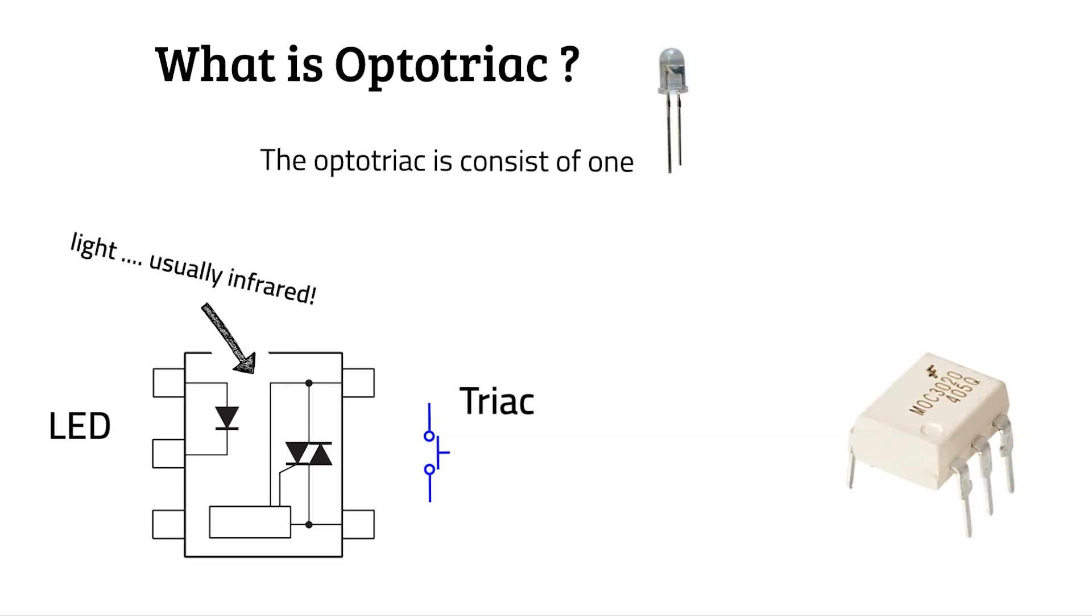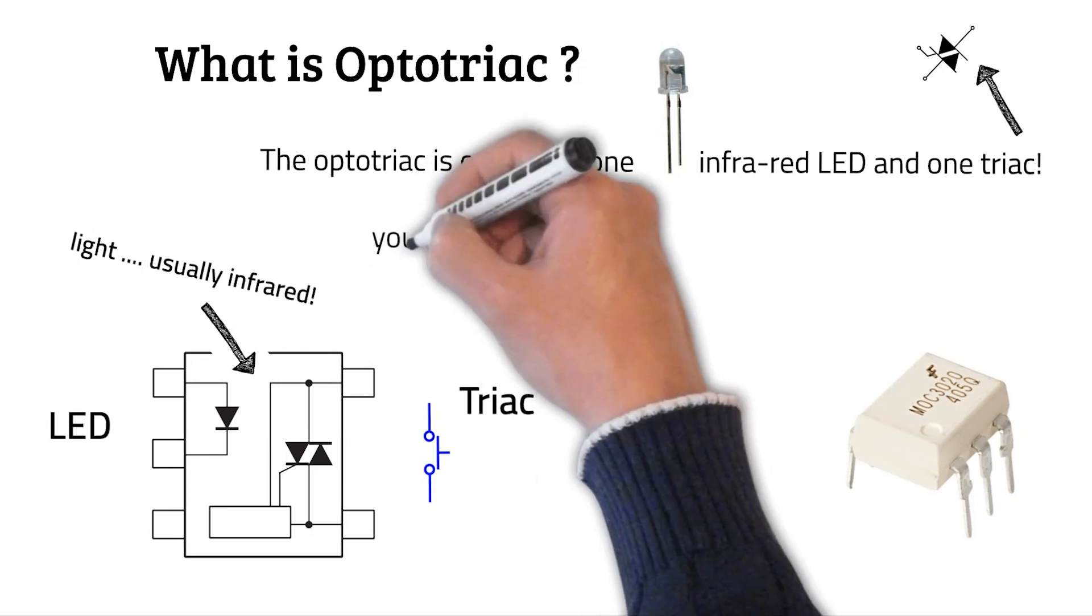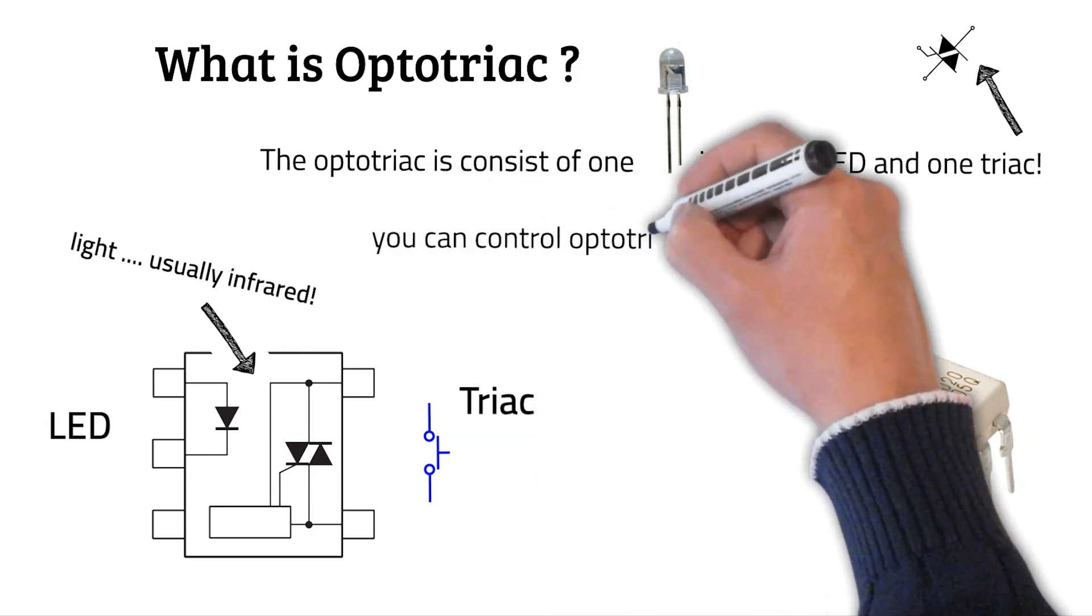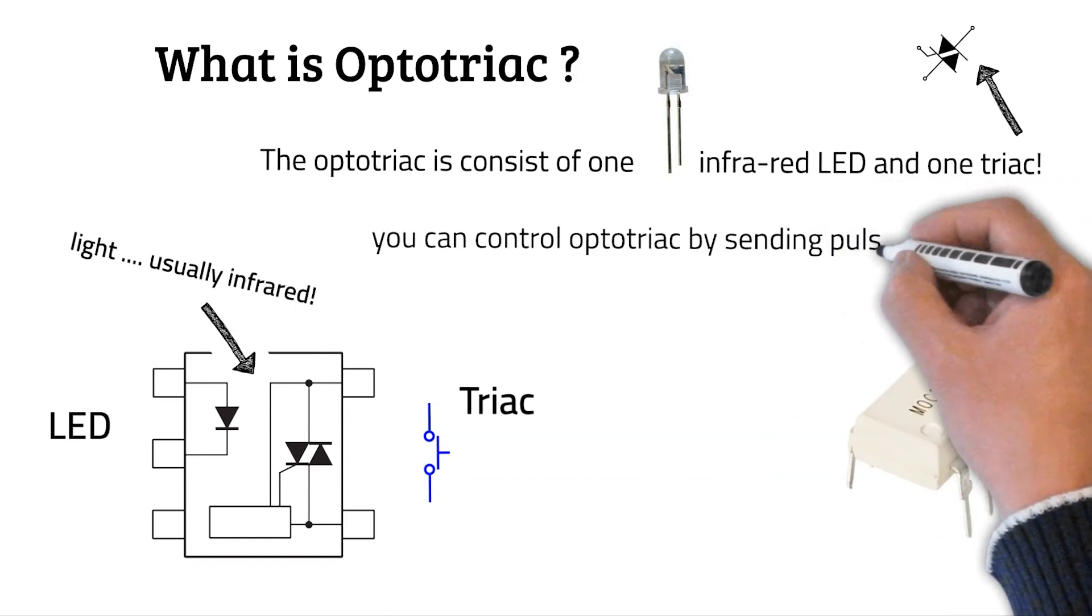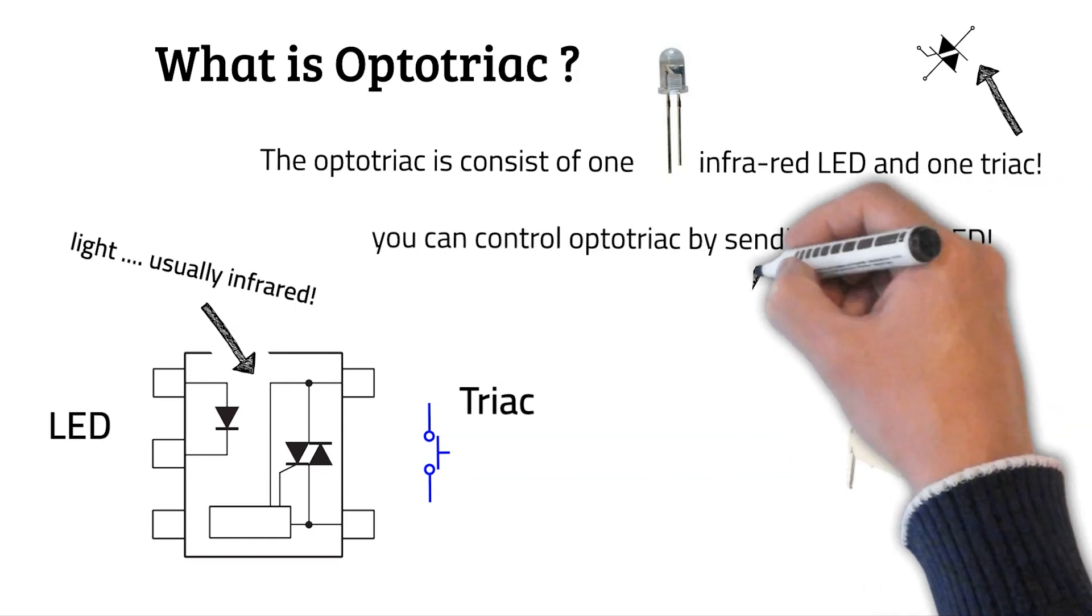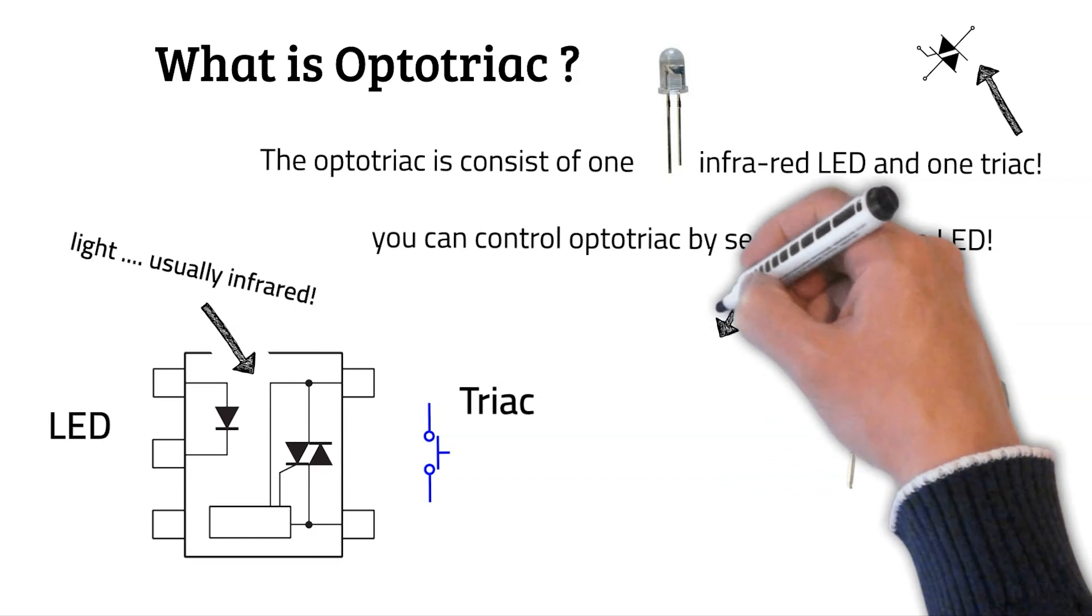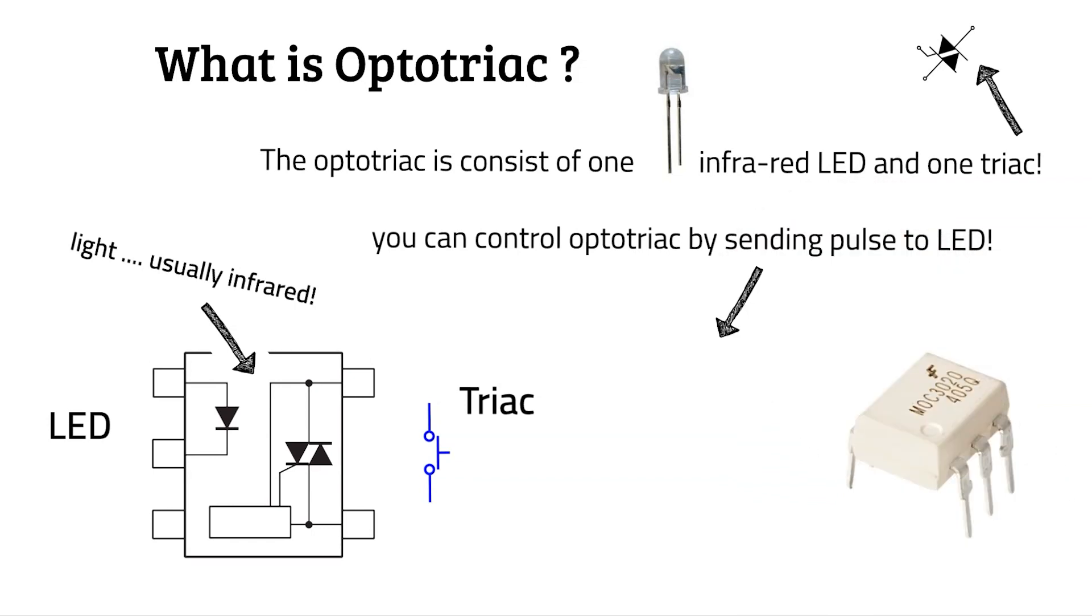The opto-triac consists of one infrared LED and one triac. The gate gets the trigger by the light of the infrared LED, and you can control the opto-triac by sending the pulse or trigger to the LED. The signals can be like this.